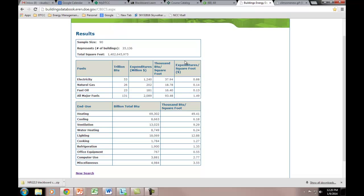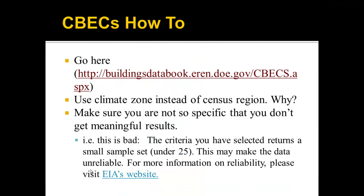These are how you're going to get the numbers for your building. You might want to narrow down your results a little more to try to get better numbers, but basically you're going to be using this. If the criteria you've selected returns a small sample set under 25, don't use that — broaden your search so you get a sample size of more than 25. We got 90 in the example I just showed.